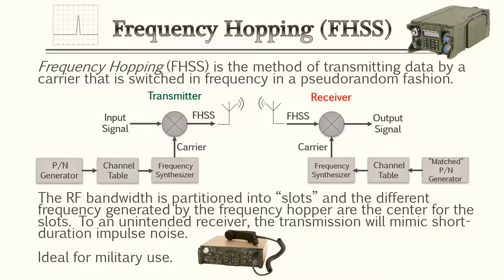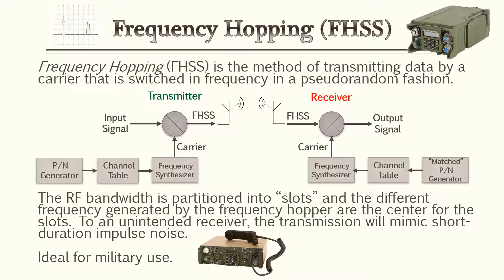Frequency hopping is the method of transmitting data by a carrier that is switched in frequency in a pseudo-random fashion. If you have a bandwidth, it's going to be broken up and partitioned into slots. Every time the frequency hops, it's going to hop to the center of each slot and appear random — all determined by the pseudo noise code.